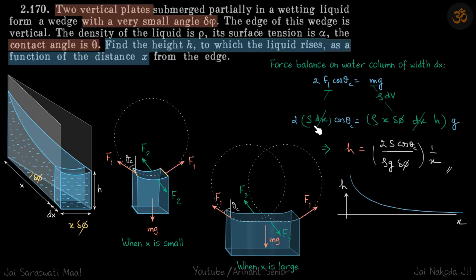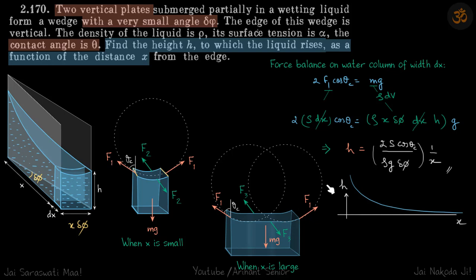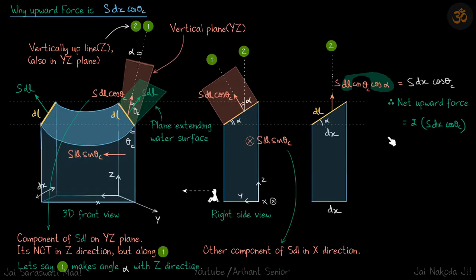So the simplification 2f1·cos(θc) = 2s·dx·cos(θc) is now justified through this geometric decomposition. That's it — go through the diagrams carefully and see if you can visualize what we did here. Excellent problem.